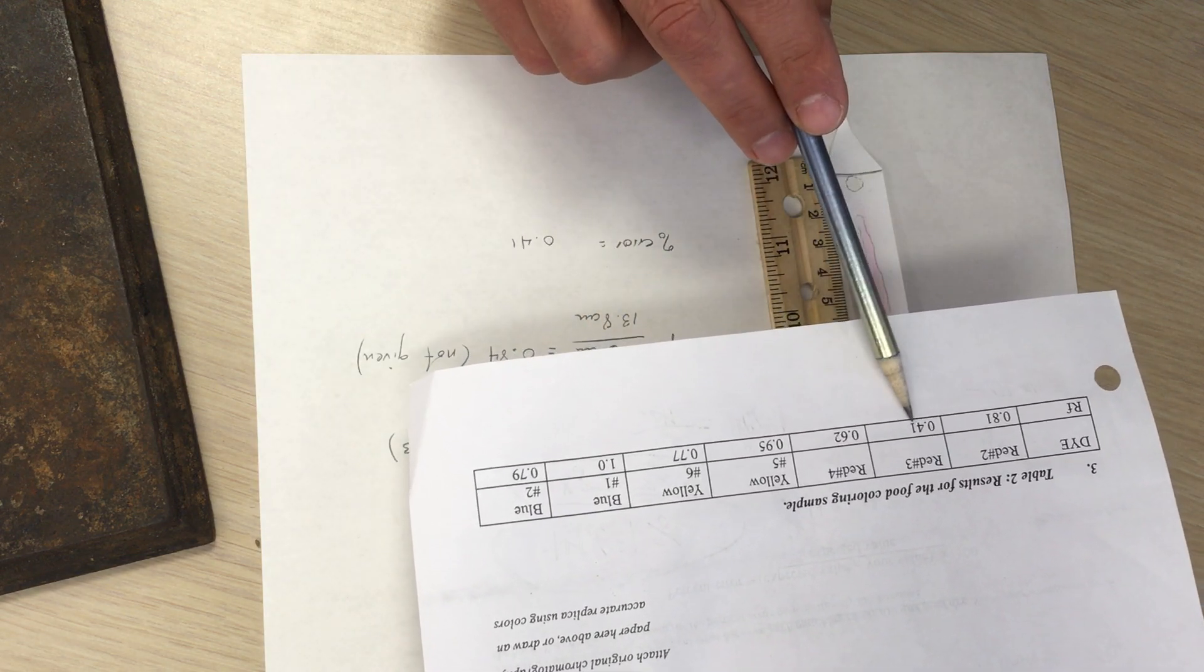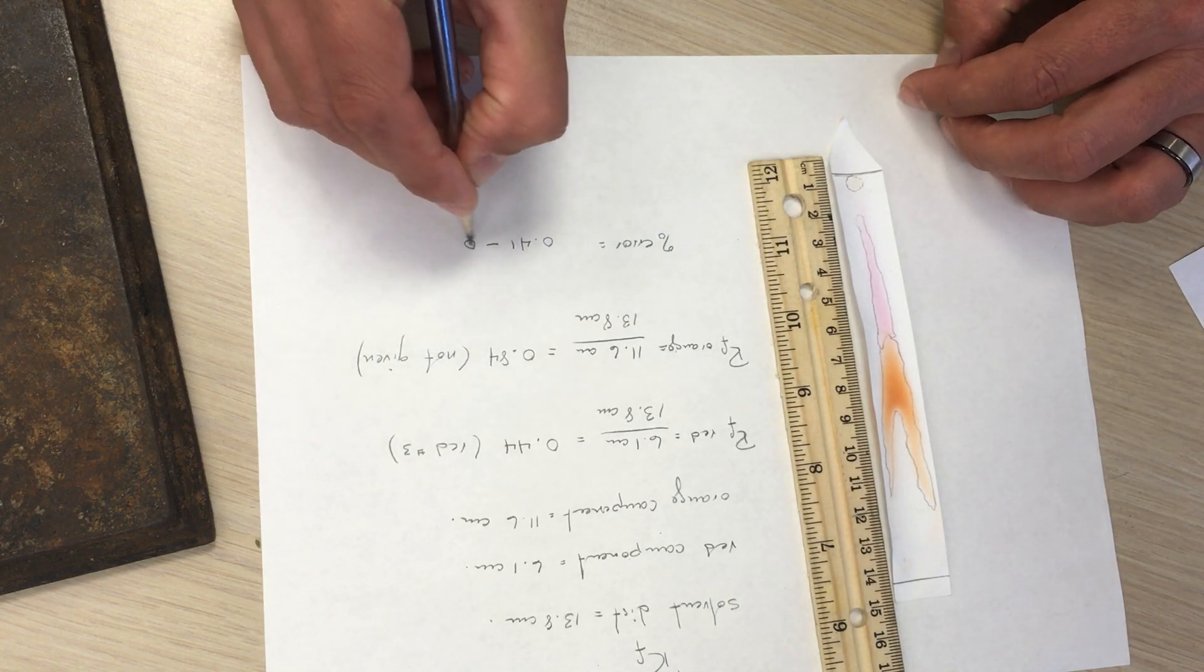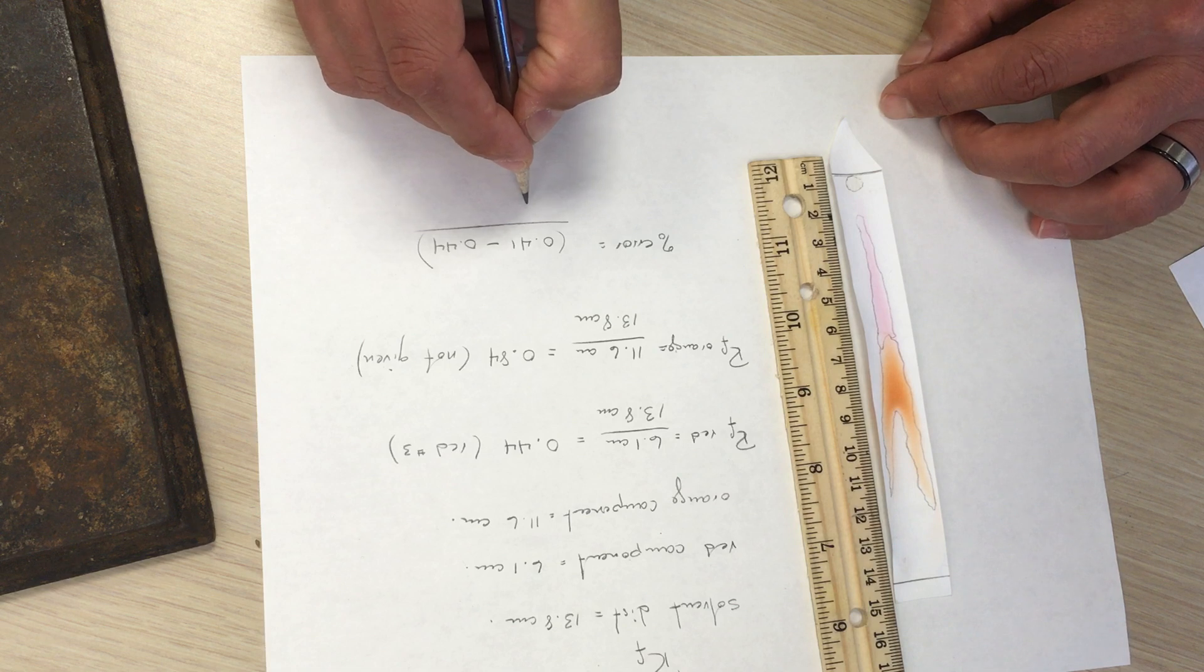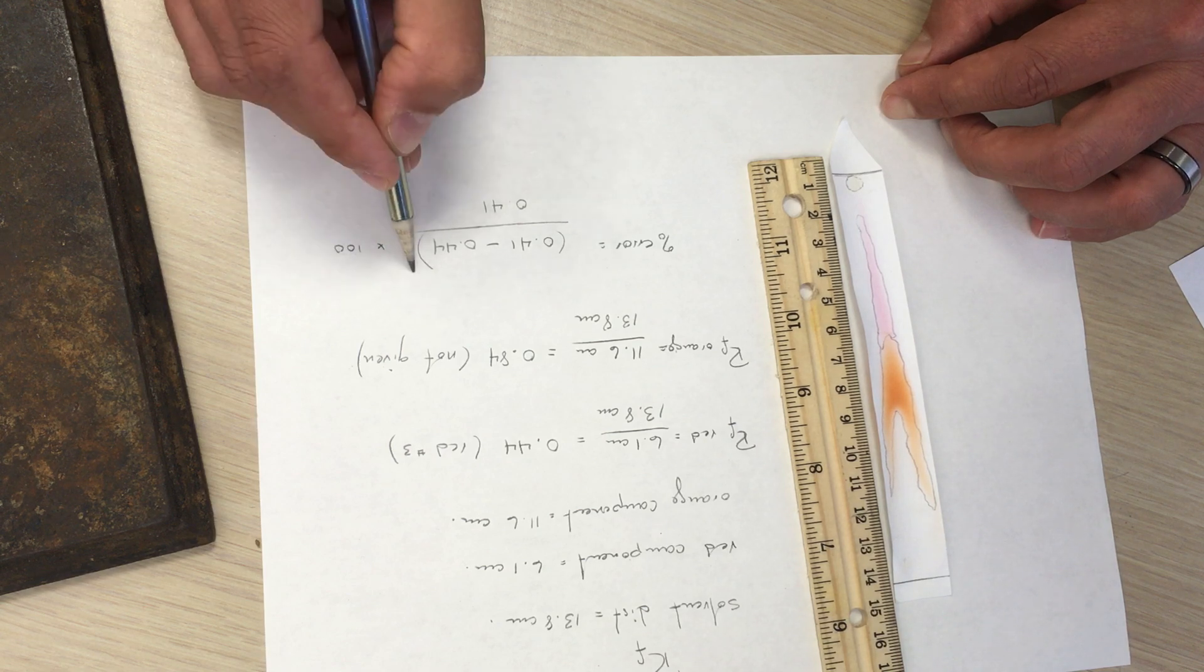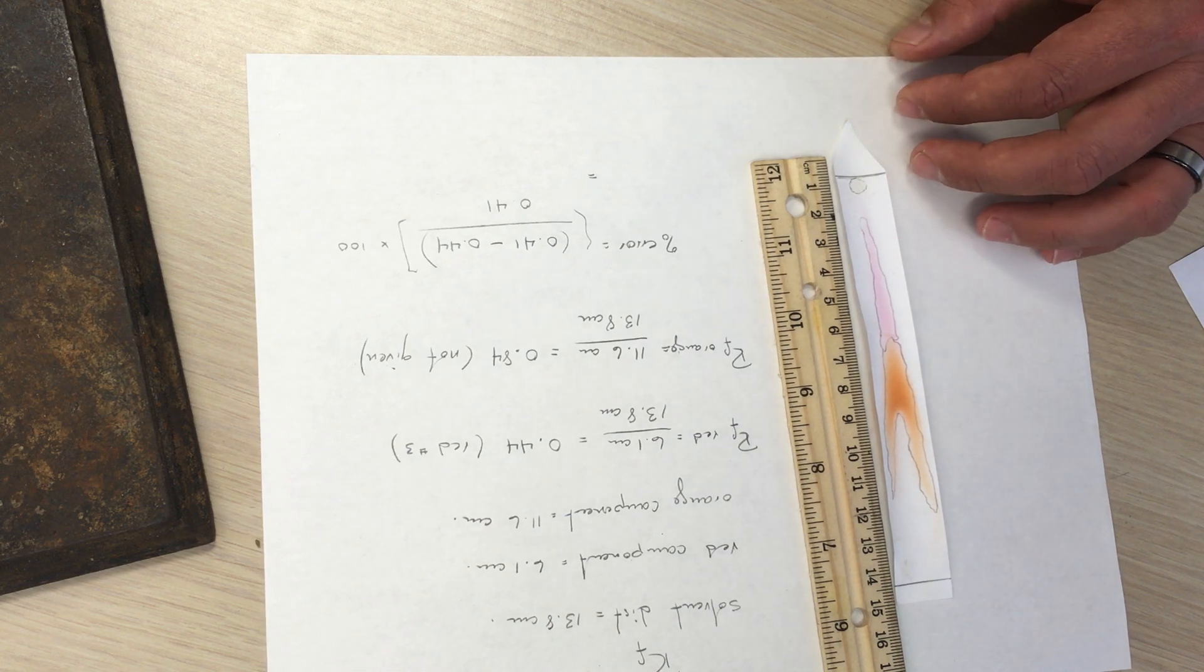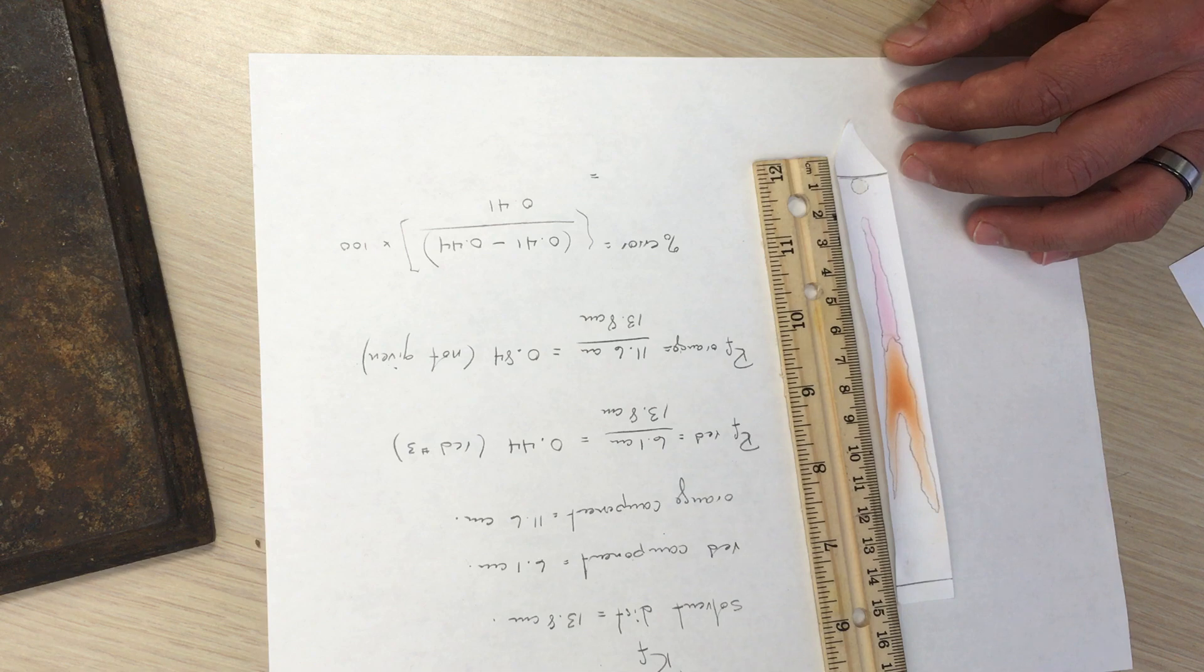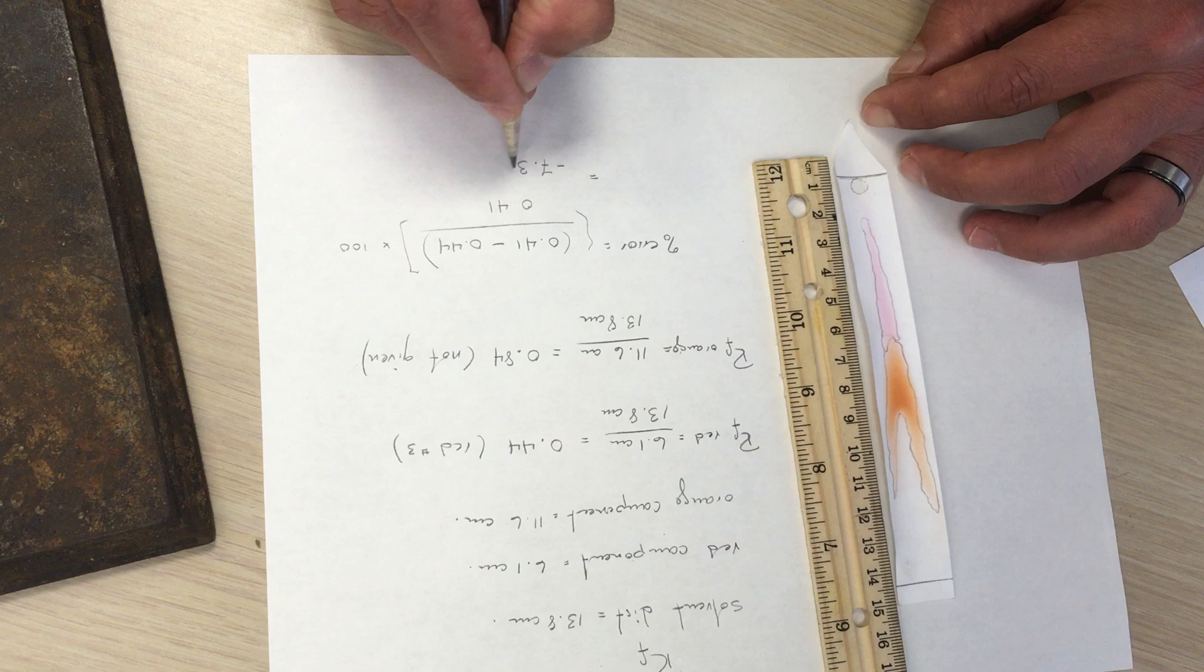So for red number three, 0.41, that would be the expected value. What we did, our value is 0.44, and we divide this by the accepted value or expected value of 0.41. And then we're going to multiply this by 100 to get a percentage in percent form. So we have 0.41 minus 0.44, and this is divided by 0.41. So that gives us a negative 7.3% error.